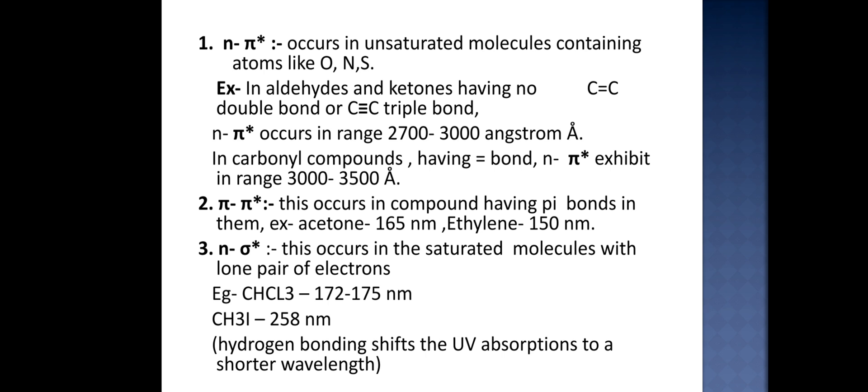Second is π to π* anti-bonding orbital. This type of transition occurs in compounds having pi bonds in them. Example is acetone which has lambda max 165 nanometers, and ethylene has lambda max of 150 nanometers.